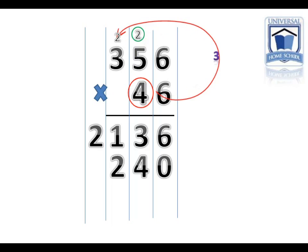Step 3. 4 times 3 plus 2 would be 14. So we put the 4 down, and we have to create another column to put the 1 into.